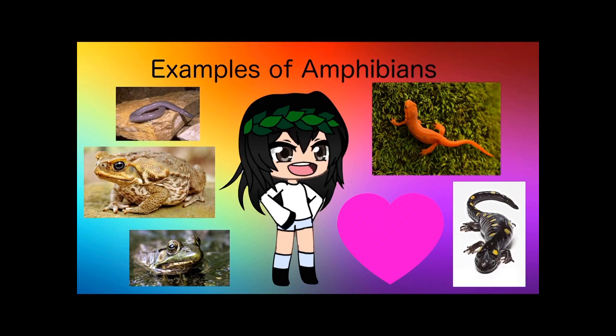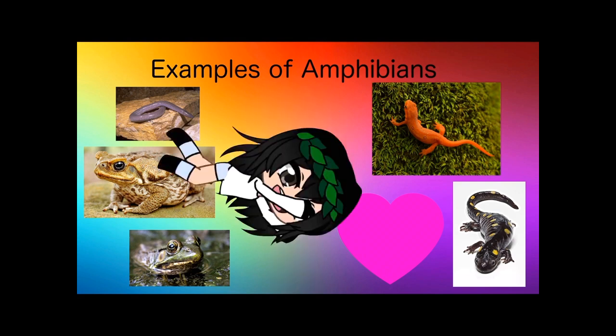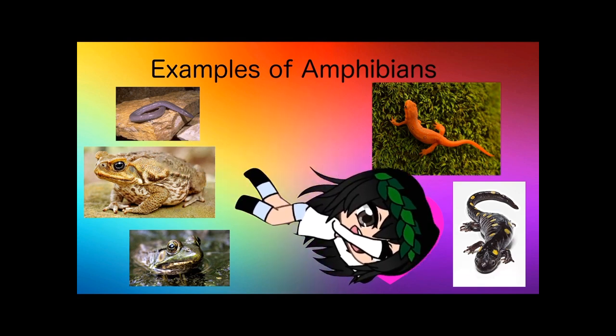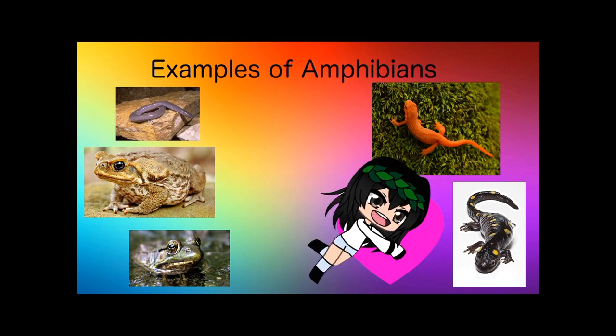Examples of amphibians: in the top right you see a newt. Right below it is a salamander. The top left, that's the caecilian, which is a type of worm that actually lives underground. Below it is the toad, which I'm sure all of you have heard of and probably even touched. And then there's frogs, which is what this presentation is all about. And of course, the axolotl, which I absolutely love!